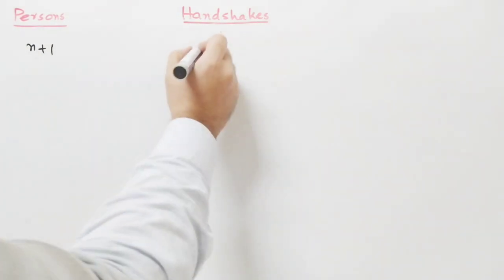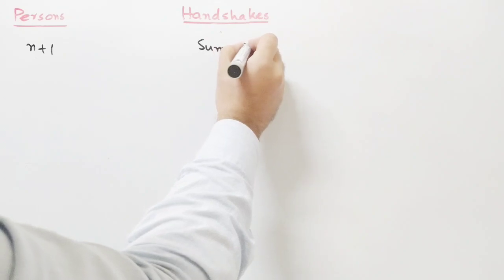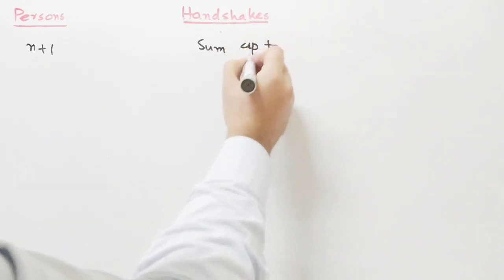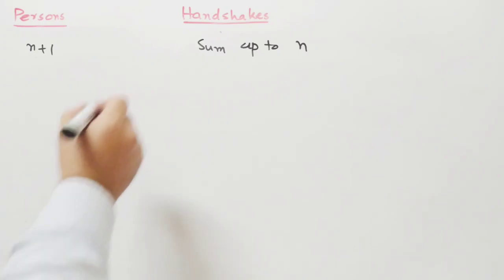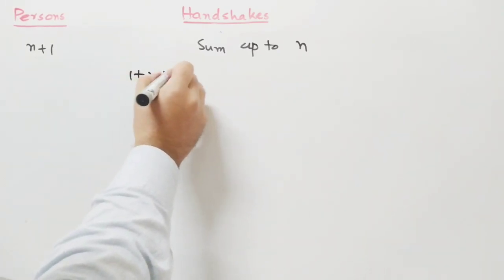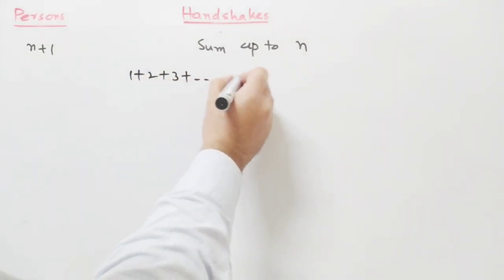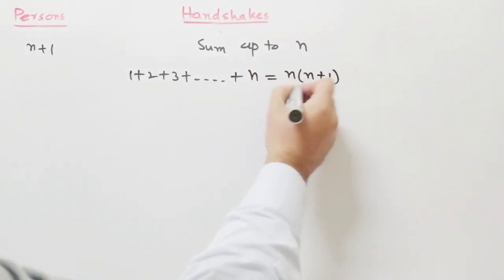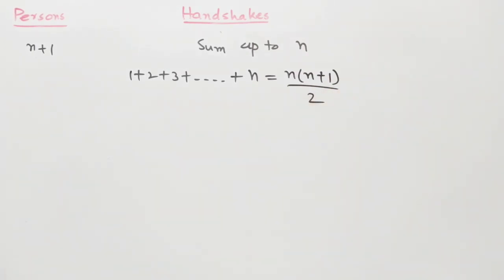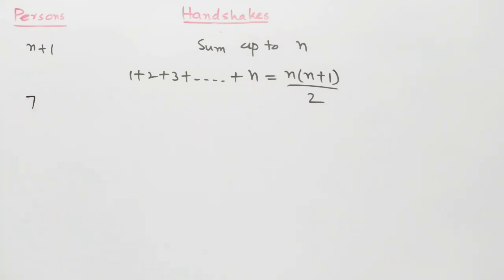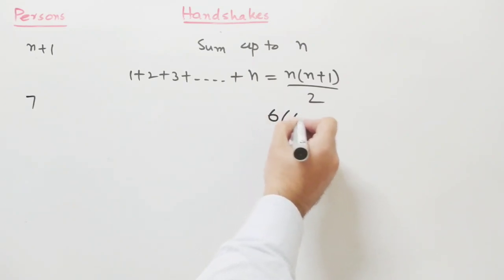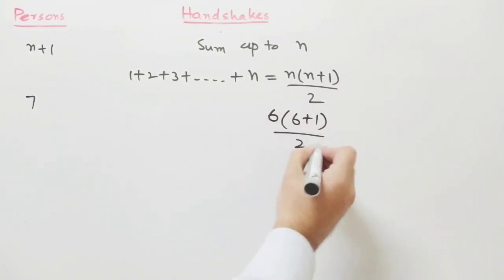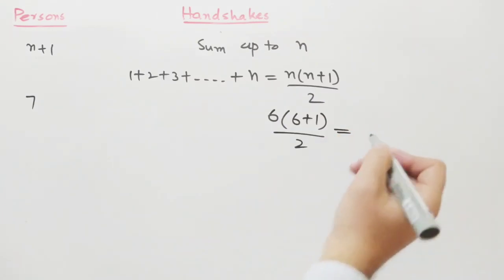Now if we have n plus one persons, the handshakes will sum up to n. We know that the sum up to n — that is, one plus two plus three up to n — is equal to n times (n plus one) divided by two. So now if we have seven persons, there will be six times (six plus one) divided by two, which is equal to twenty-one handshakes.